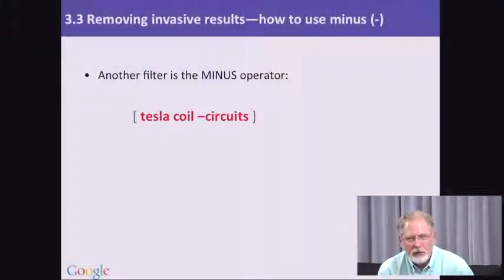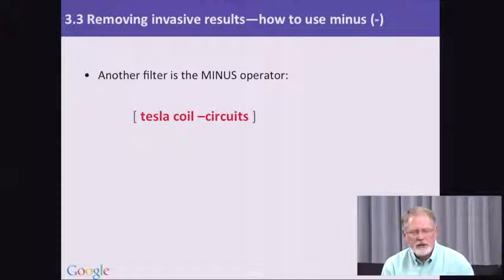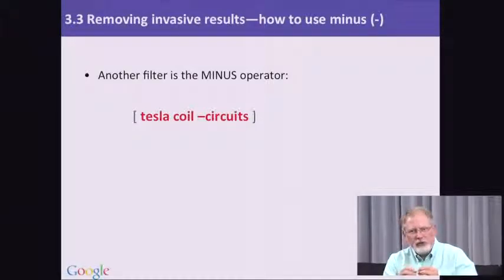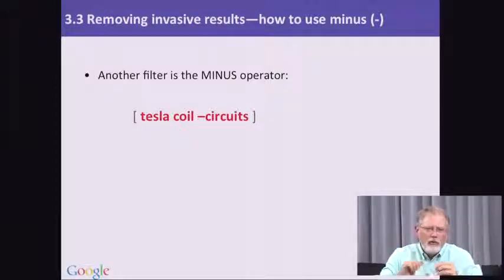Another important filter operator is the minus sign. The minus sign is just a hyphen that's put in front of a term that you want to have excluded from the search results. In our example here, we're using 'Tesla coil' minus the word 'circuits'. The way to think about this is that when you put a minus sign in front of a term, it's as though you're erasing it from all of the search results that you've gathered thus far.